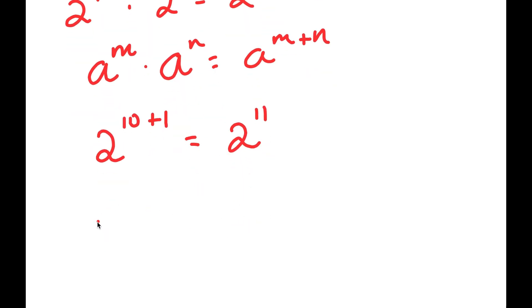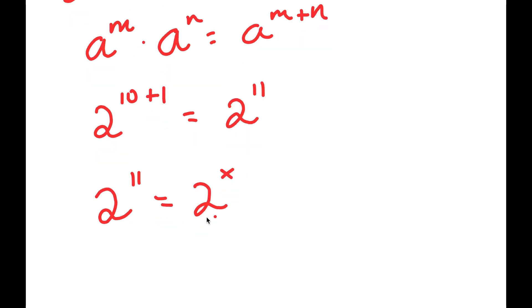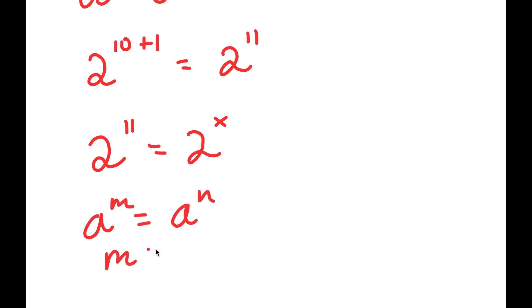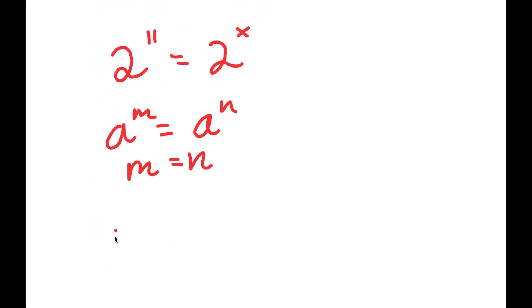So I get 2 to the power of 11 is equal to 2 to the power of x. And if I have something in the form a to the power of m is equal to a to the power of n, this means that m is equal to n. So in this case, x is equal to 11.